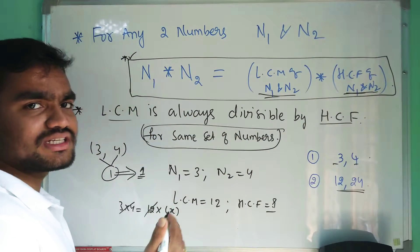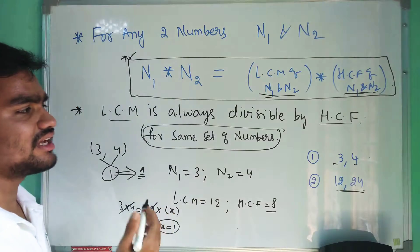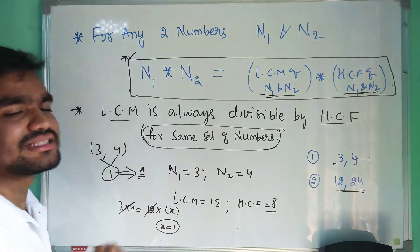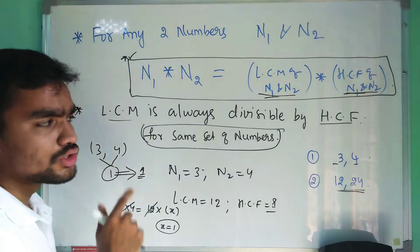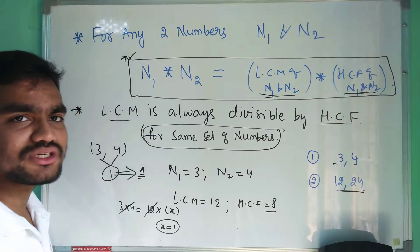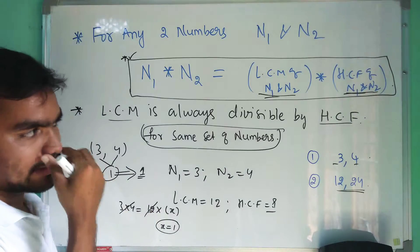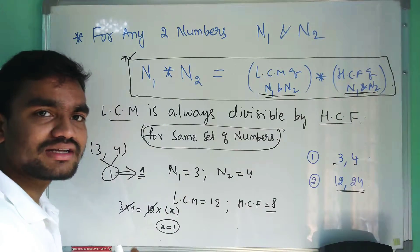So then you go cross-check the options, whether the HCF or the option is divisible by LCM or not, or the option LCM is divisible by HCF or not. So in this way you can eliminate some options and you can easily conclude the sum or easily tick the answer.